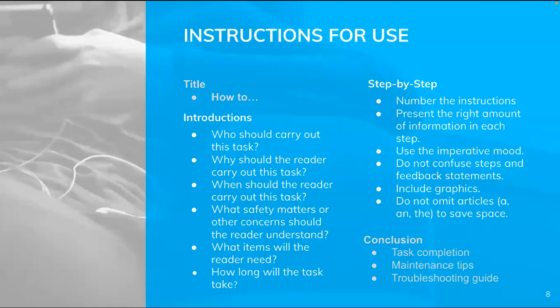The title should be something like 'How to X, Y, Z.' It should not be 'Instructions for using blah blah blah,' although it could be 'Using Product X.' You don't want a string of nouns and you don't want it to be ambiguous. You want it to be specific and active — 'how to do this' or 'doing this.'